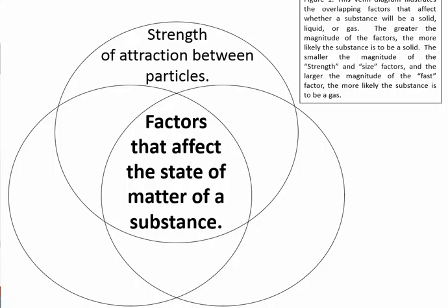Polar molecules have an attraction both to themselves and to ionic particles. In a polar molecule, one side is positive and one side is negative. Water molecules are polar, and they can pull apart an ionic compound. Not because one water molecule is stronger than the ionic attraction, but because there are a lot of them. The positive end of water is attracted to the negative chloride ion, and the negative end is attracted to the positive sodium ion.